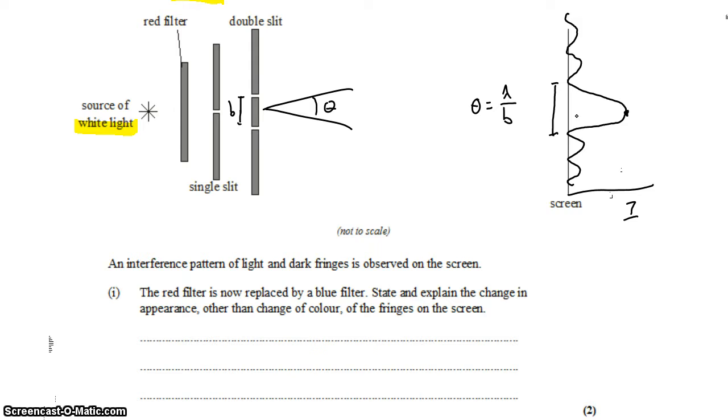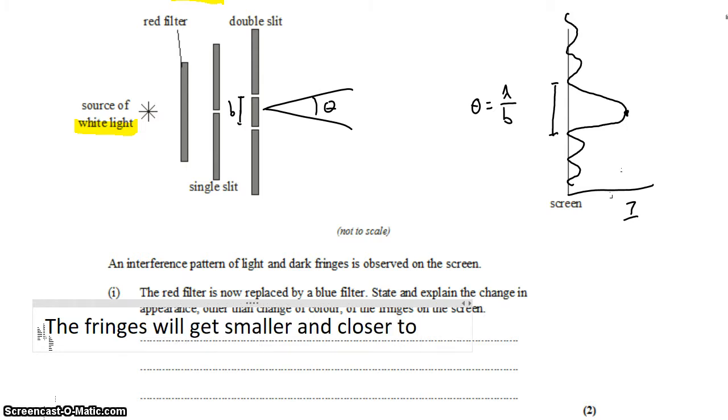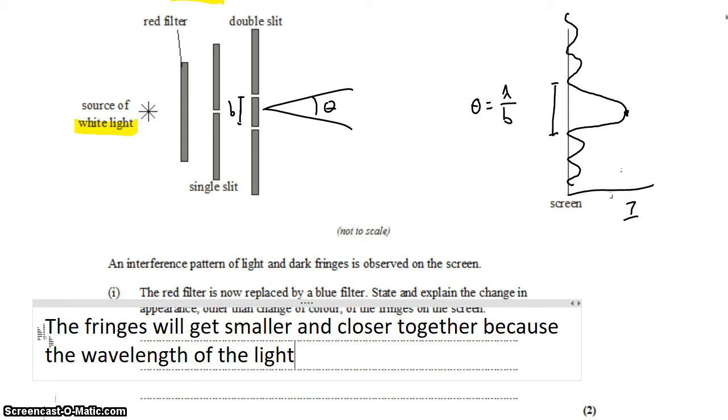The width of the maximum will get smaller, and the interference pattern will appear smaller. So we can say that the fringes will get smaller and closer together because the wavelength of the light is smaller or shorter. So we have to state and explain.